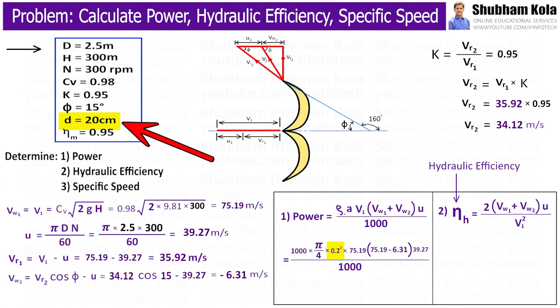In given data, the diameter of jet small d, which has given as 20 cm equal to 0.2 m. Therefore, the area of jet of water, i.e. small a, is pi by 4, 0.2 square. And we know the density of water, i.e. rho, which is equal to 1000 kg per m cube.